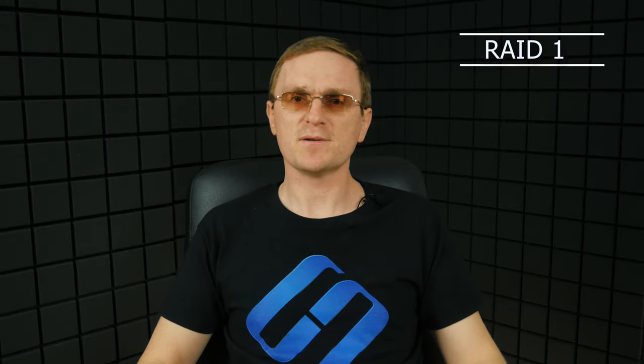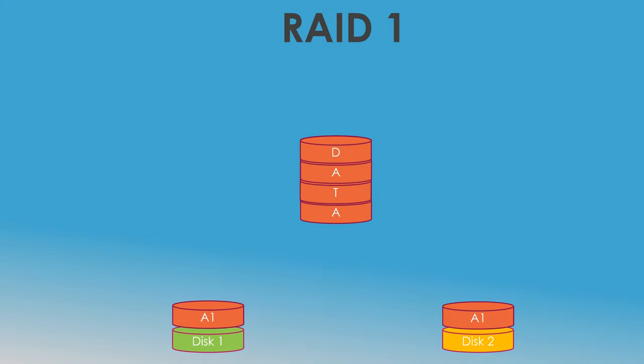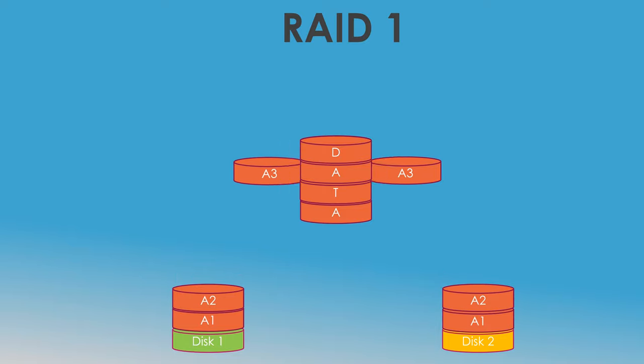Another type is RAID 1, which uses the principle of data mirroring. Data is written in parallel to the main data drive and a mirror drive. In other words, data is written to the main disk and copied to the mirror disk. Such a pattern of disk usage doesn't affect their performance at all, but only half of the total disk capacity is available. This array type is widely used in servers because even if one of the drives fails, all copied data is safely stored on other drives, which act as backup storage.